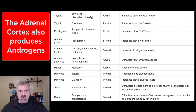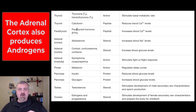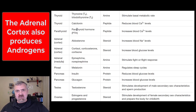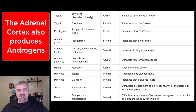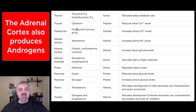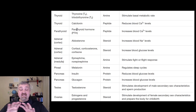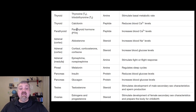The adrenal cortex also produces androgens — your male sex hormones. Girls, women, and prepubescent boys get their androgens from the adrenal glands. Once a boy reaches puberty, the testicles will basically take over. This is a relatively minor function of the adrenal cortex. The cortex is the outside of the adrenal glands, which sit on top of the kidneys.